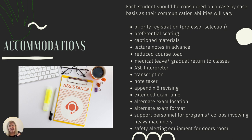Thinking outside the box, the student may require alerting or signaling devices for a new dorm room or living spaces. Priority registration can also assist the student to select a smaller class size — it would be more ideal to be in a class with 50 students instead of 300. The smaller class will change the room acoustics, and even a newer auditorium versus a very old reverberant lecture hall can make a big difference.